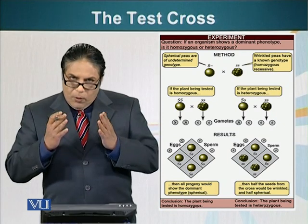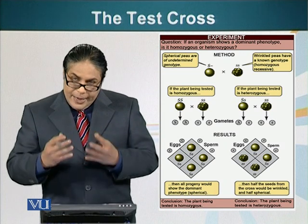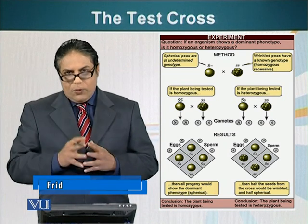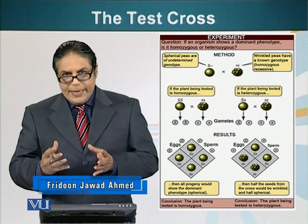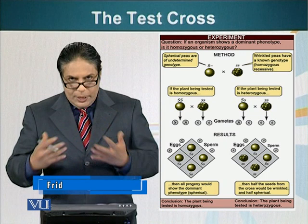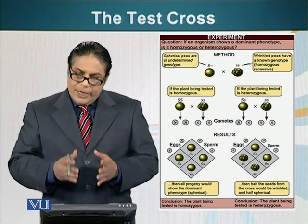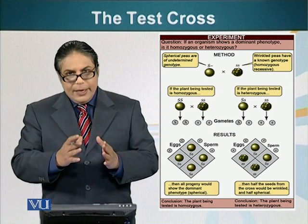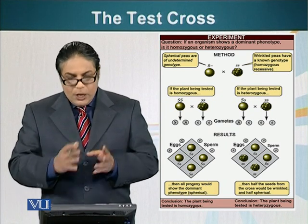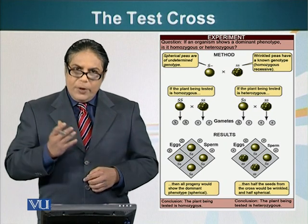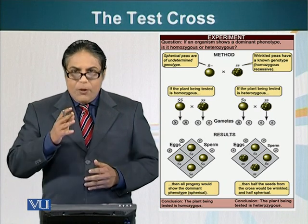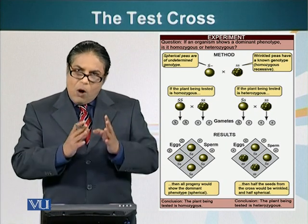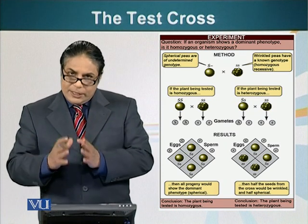In order to prove that the F1 generation had a recessive gene — small s gene — Mendel performed a test cross. A test cross is performed to ascertain the genotype of an unknown individual. In this case, our individual is a plant with a round seed. We know this plant could be heterozygous or homozygous, meaning it can have two capital S genes, or one capital S and one small s gene. The test cross is between an individual of unknown genotype and the homozygous recessive of the same trait.